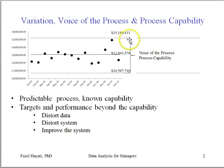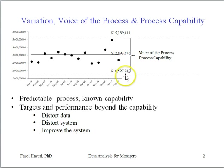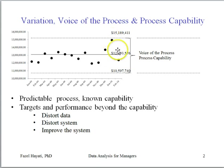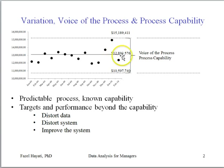One may say this is too much noise, too much variation for decision making. Remember that we calculated these limits using the process data, so what you see is what the process is communicating. If we're not happy with this, then we have to fundamentally change the system and the process.